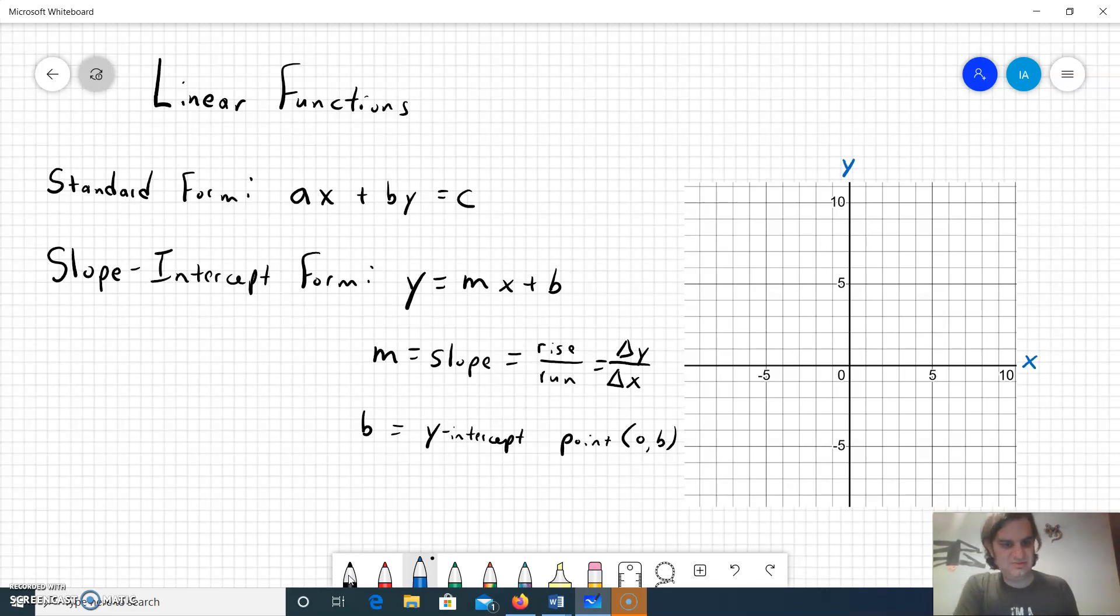I'll show you how to work with slope-intercept form to graph a function. Let's start with an example, y equals negative one-half x plus three. In that scenario, we know it's already in slope-intercept form where the m or slope is negative one-half and the y-intercept is a point zero three.